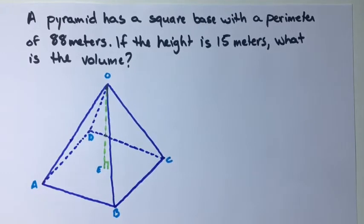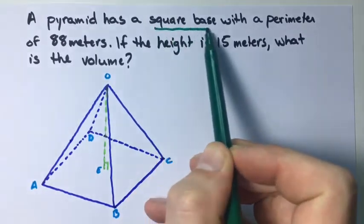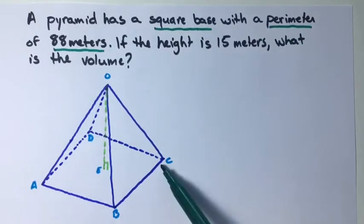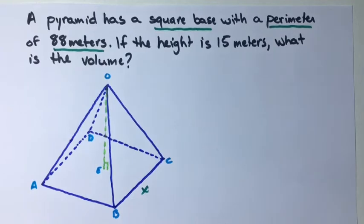So since we know that the base is a square and we know that the perimeter is 88 meters, we can go ahead and find the side length here. So let's call that x.